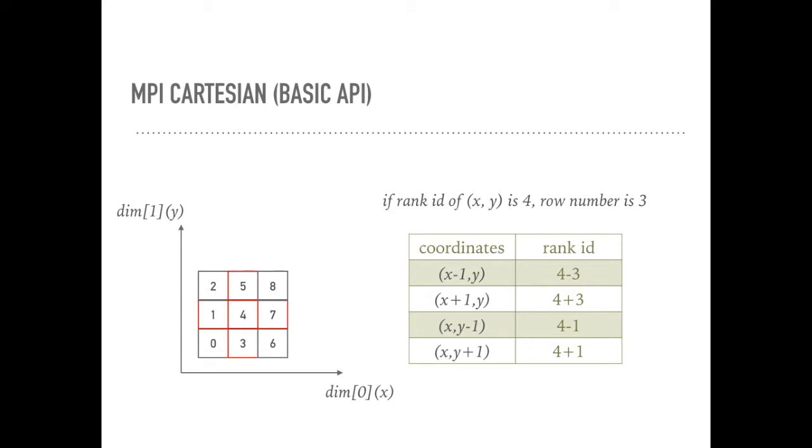For example, if the dimension array is a 2D array like this, the rank ID is calculated by two for loops. If we use x to represent the horizontal axis, and use y to represent the vertical axis.